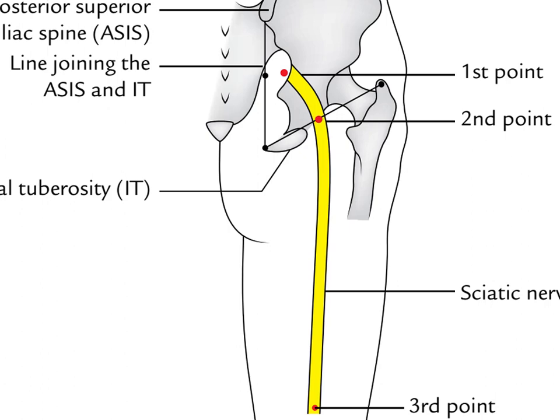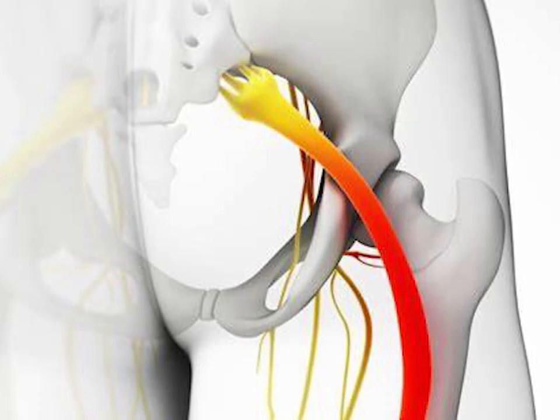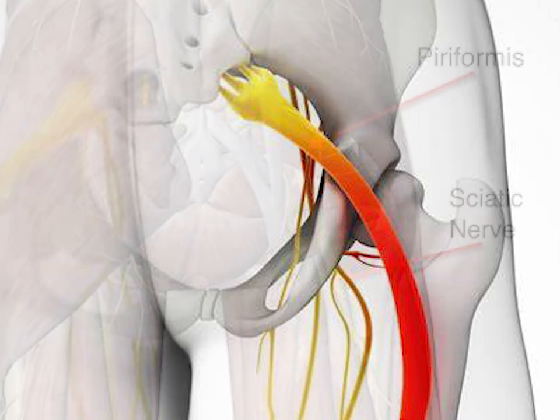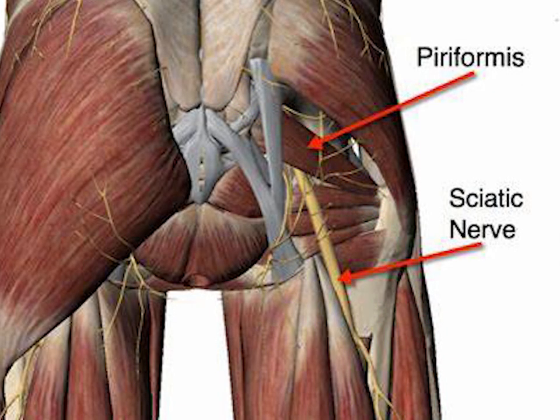The nerve passes beneath the piriformis and through the greater sciatic foramen, exiting the pelvis. From here, it travels down the posterior thigh to the popliteal fossa. The nerve travels in the posterior compartment of the thigh behind the adductor magnus muscle and is itself in front of the long head of the biceps femoris muscle.